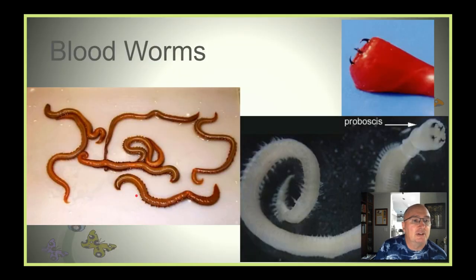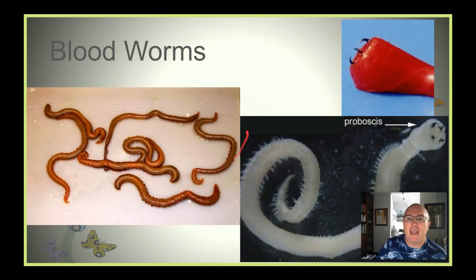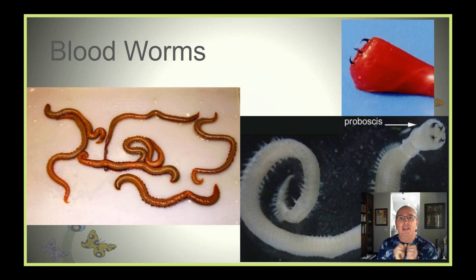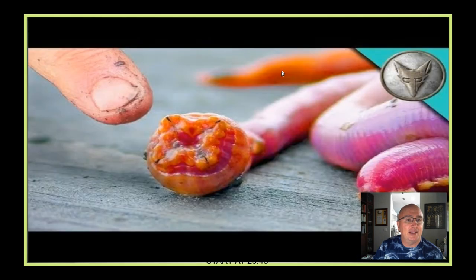Another particular member of Annelida are the blood worms, a really weird group. They have something called a proboscis which they can pull into their mouth area and then shoot out fairly quickly. It has barbs that can reach and grab hold of things and then start eating and digesting whatever it grabs hold of. We have a little video about that.